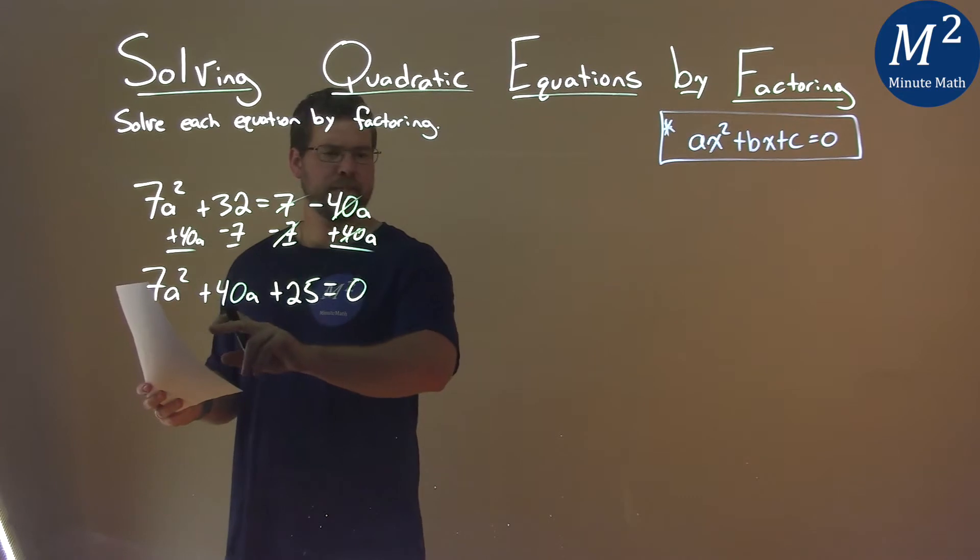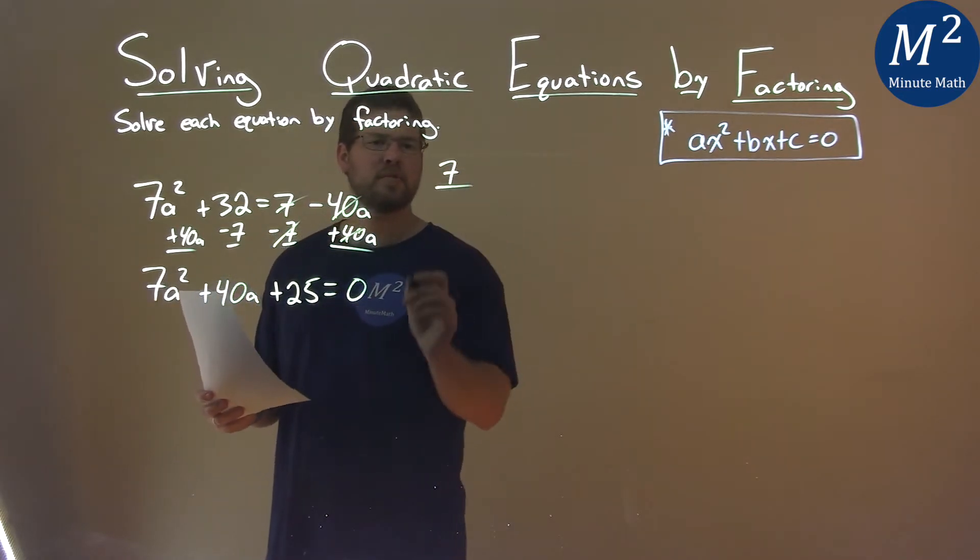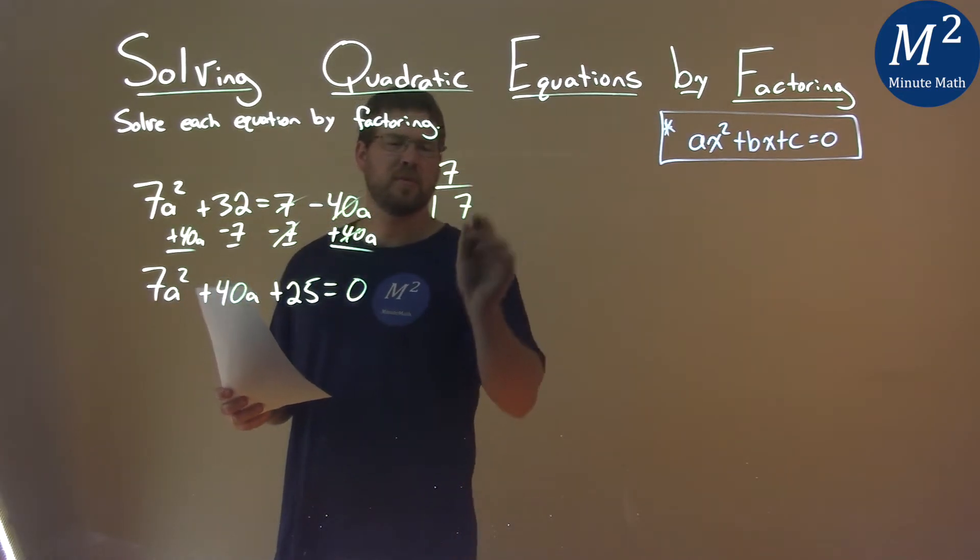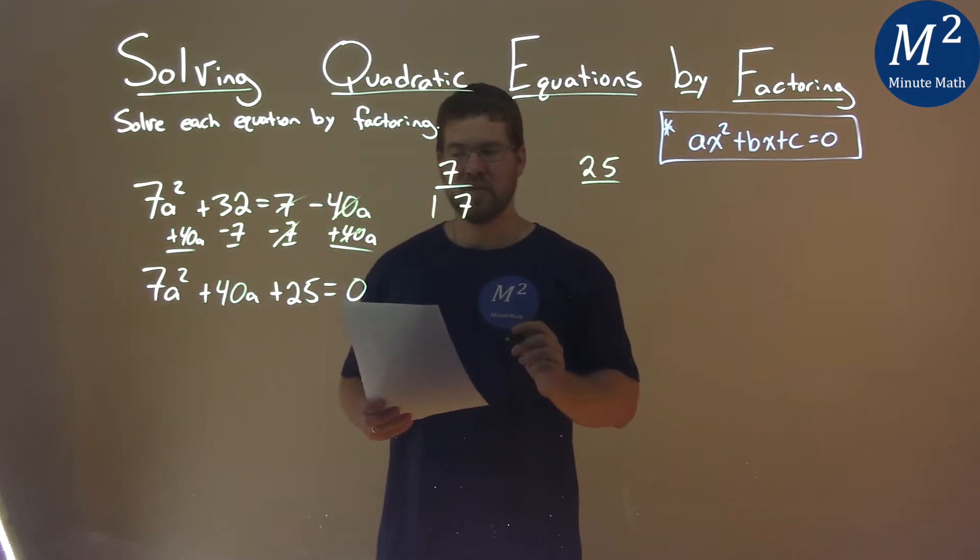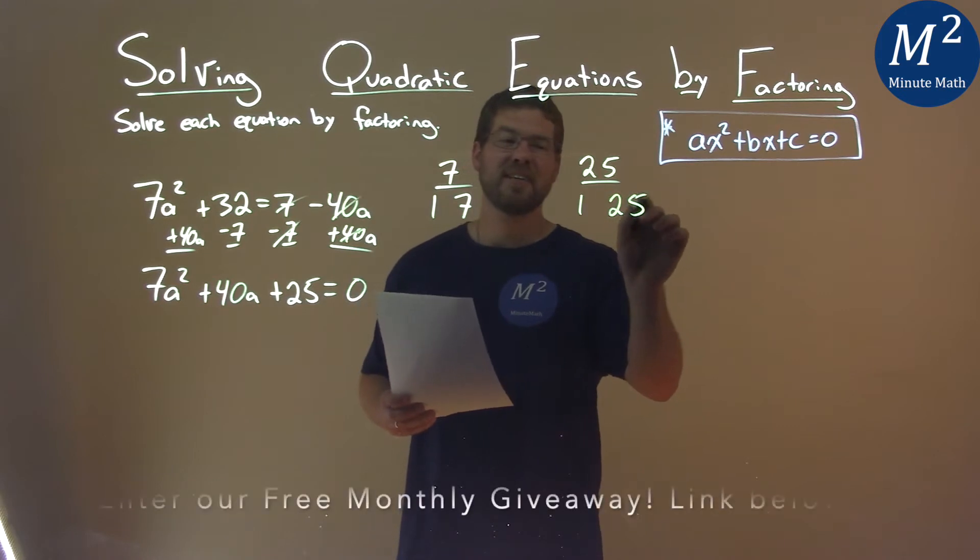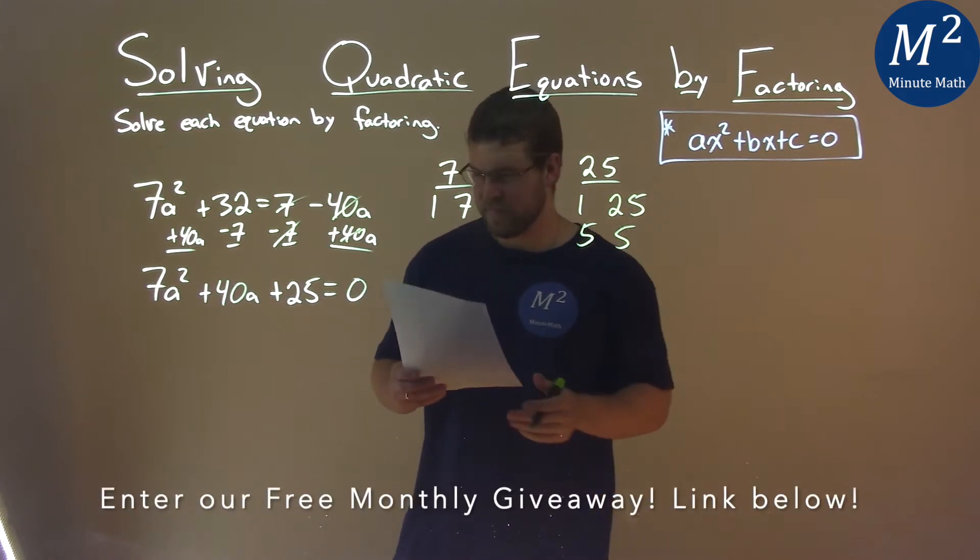Let's go factor it. My a coefficient is 7, and the only two factors are 1 and 7. For 25, what two numbers multiply to be 25? That's 1 and 25, or 5 and 5.